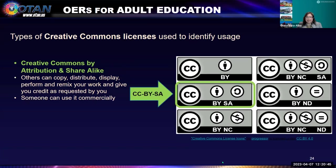The next license is CC BY SA — Creative Commons by attribution, share alike. Others can copy, distribute, display, perform, and remix your work and give you credit. Someone can use your license commercially, but if they use your materials with this license, they also have to use the same license on their revised materials and share it with others under the same license. This preserves the integrity of the original author's work.